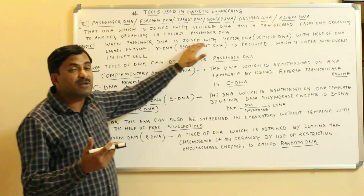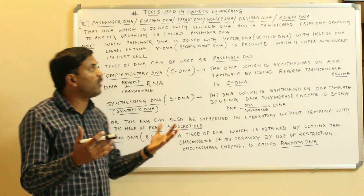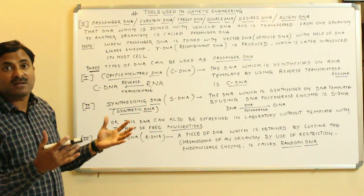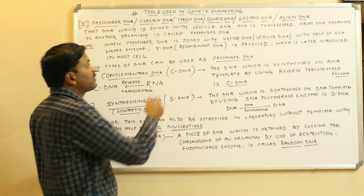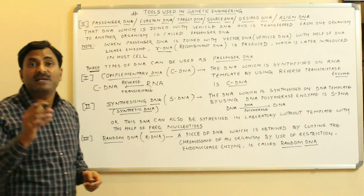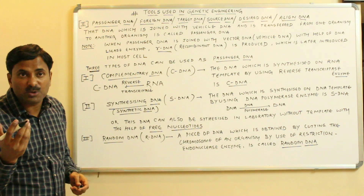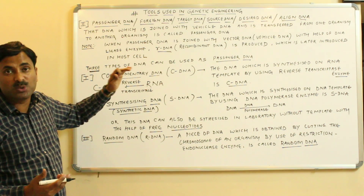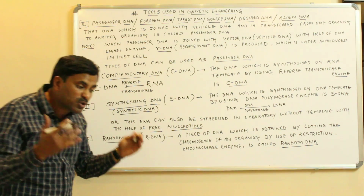a new DNA is constructed and that is known as the recombinant DNA, which is later introduced into the host cell. So passenger DNA is a very important tool used in genetic engineering. Now a big question arises: which type of DNA can be used in genetic engineering as the passenger DNA?